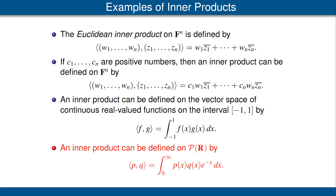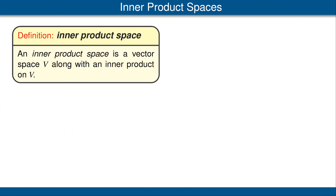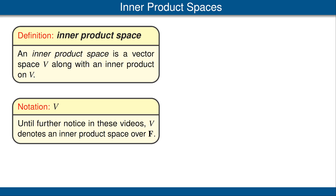The key point for all four of these examples is that an inner product is a function depending upon a vector space, and it gives us, for each two vectors in that vector space, a scalar. When we call something an inner product space, we mean that it is a vector space along with an inner product on it. Until further notice in these videos, we will let V denote an inner product space over F, so we will not have to repeat in the hypothesis of each result that V is an inner product space.